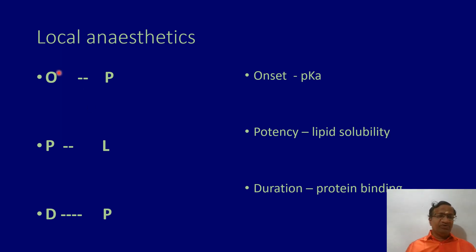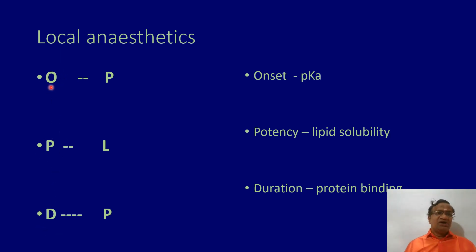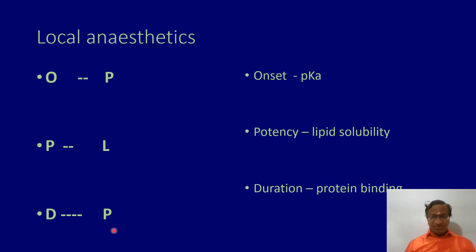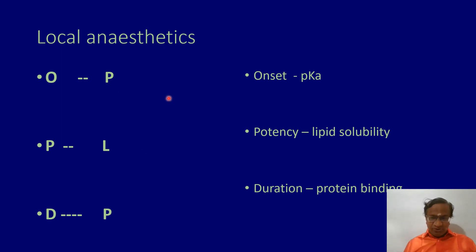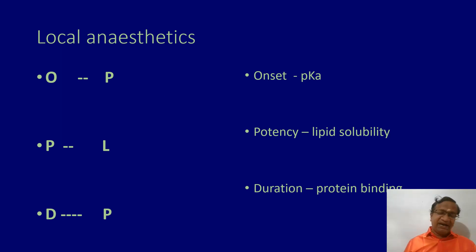I have a mnemonic called OPD: O is onset, P is potency, and D is duration. Onset depends upon the pKa of the local anesthetic. Potency depends upon the lipid solubility. And duration depends upon the protein binding. There are also other factors, which will be discussed in the pharmacokinetics of local anesthetics in a separate video.